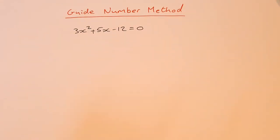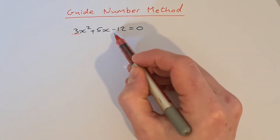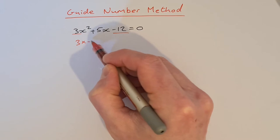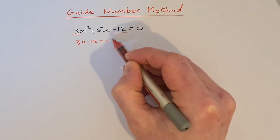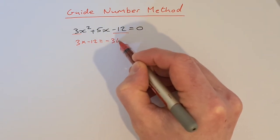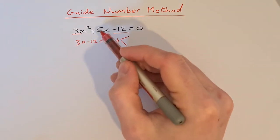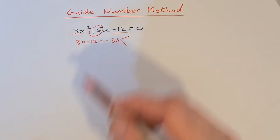What you do is you multiply the coefficient of the x squared by the constant. So I'm going to go 3 multiplied by minus 12, that will give me minus 36. Then what I do is I try to factorize this minus 36 and get factors that add together to give me plus 5.